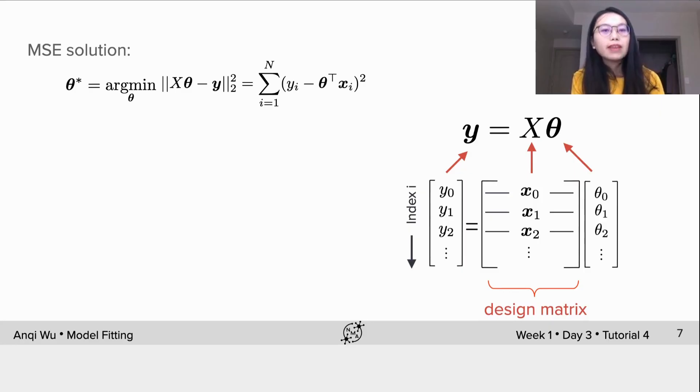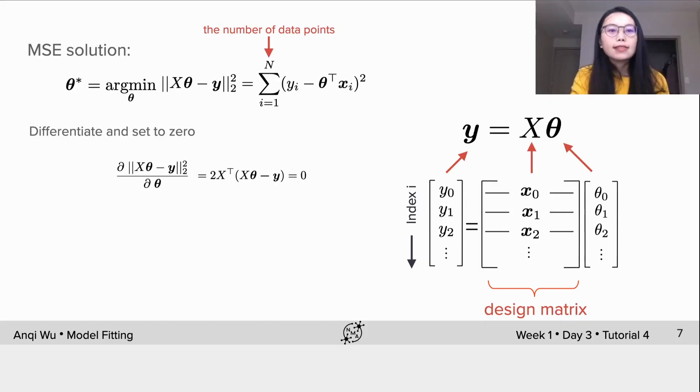Next, we give the formal mathematical expression of MSE for the multiple linear regression model using the matrix version expression. It is the 2-norm of the vector x multiplying theta minus y, which is expanded as the sum of square distance between yi and theta multiplying xi for all data points i. Still, n is the number of data points. We differentiate it and set the gradient to be 0, and we arrive at this closed form solution for theta, which is x transpose x inverse multiplying x transpose y.